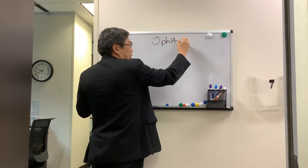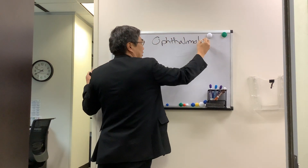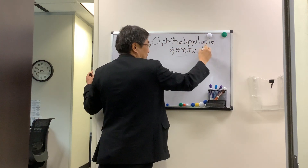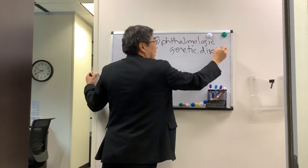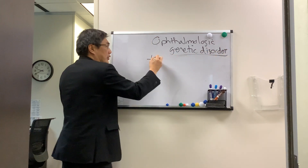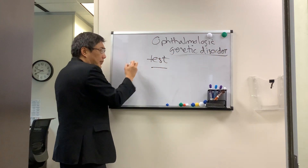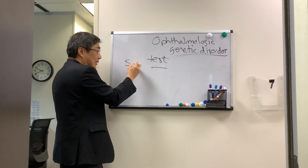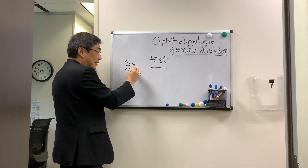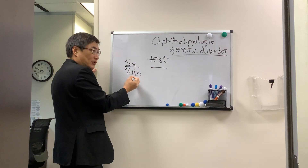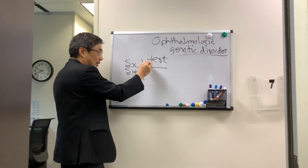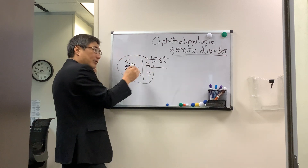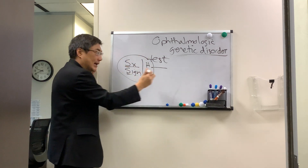Someone wanted to know what my approach is for ophthalmologic genetic disorders in terms of testing. We can't do all of ophthalmic genetics, but we can cover what you do with the test result. The structure is always the same: you have symptom and sign. Symptom is what the patient says; sign is what we see. That correlates with the history and the exam, and together this characterizes the phenotype.